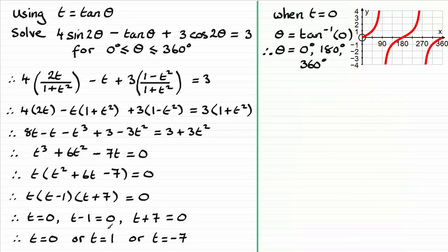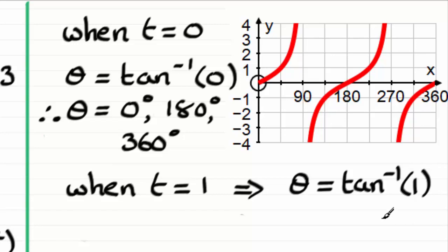And we next look at when t equals 1. That's when tan θ equals 1. And when that's the case, θ will equal the inverse tan of 1. Using your calculator again you'll find it's a well known angle, it's 45 degrees. And you can see from the graph it's 45 degrees here. Also you've got another solution which is at 180 degrees plus 45 degrees which is 225 degrees. So there's our two solutions there.